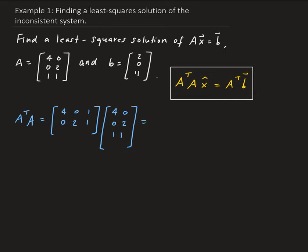This is going to give us a 2 by 2 matrix. We get 4 times 4 is 16, plus 1, so that gives us 17. Then we have 4 times 0, that's 0, plus 0, plus 1. And then 0, plus 0, plus 1. And then 0, 4, and 1, so it's going to give us 5 here.